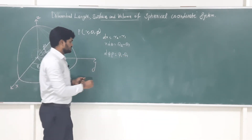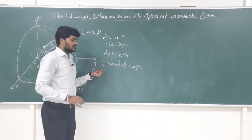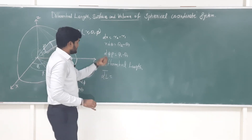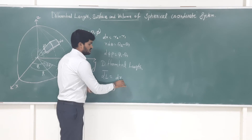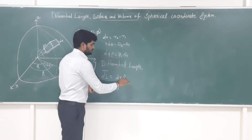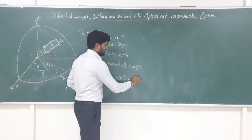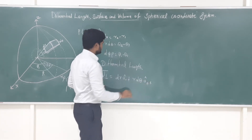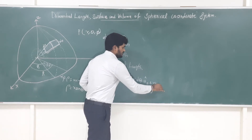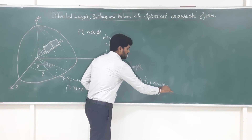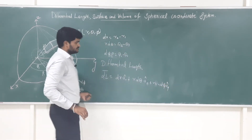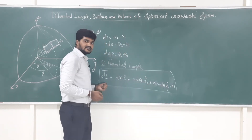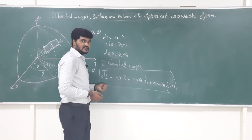The differential length dl is a vector quantity equal to: dr·ar̂ + r·dθ·aθ̂ + r·sinθ·dφ·aφ̂. The unit is meters. This is the general differential length equation of the spherical coordinate system.